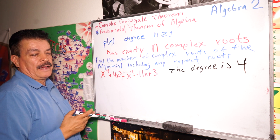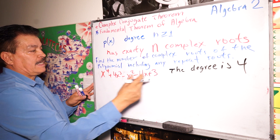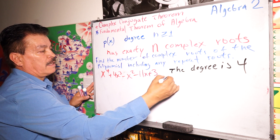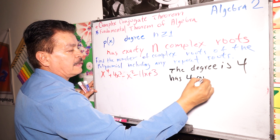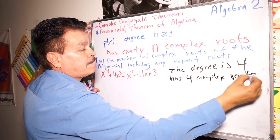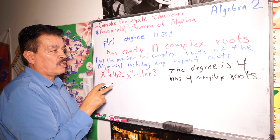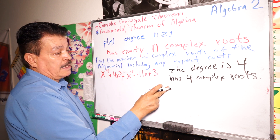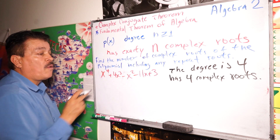Including any repeated roots, this polynomial has four complex roots. This is how the Fundamental Theorem of Algebra works — we look at the polynomial, find the biggest degree, and that number is the count of complex roots.